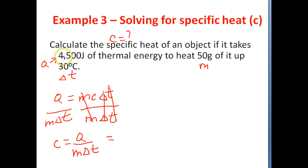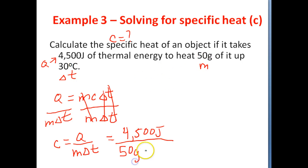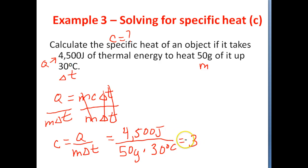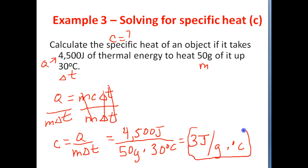Q in this problem is 4,500 joules of thermal energy being absorbed. The mass of the substance is 50 grams. The change in temperature is 30 degrees Celsius — we do not need to calculate that. We can do this: 50 times 30 is 1,500, and 4,500 divided by 1,500 is 3. The unit left over is joules over grams times degrees Celsius. So our final answer is 3 joules over grams times degrees Celsius.